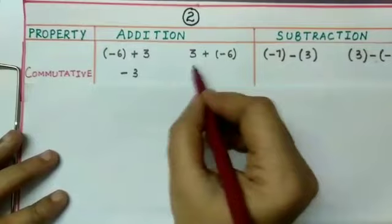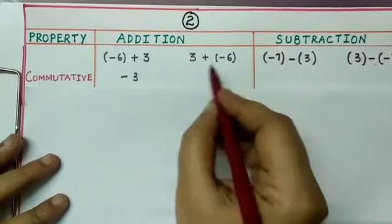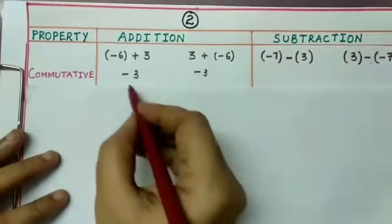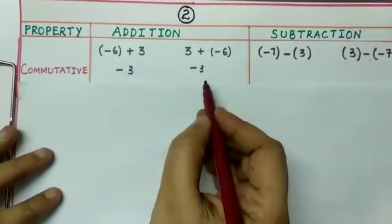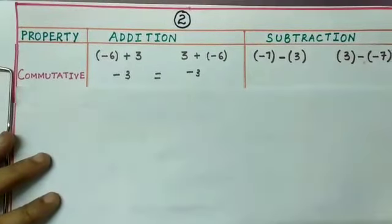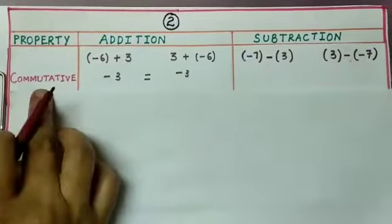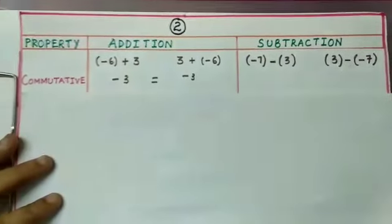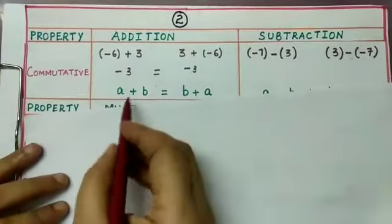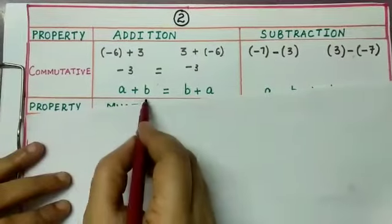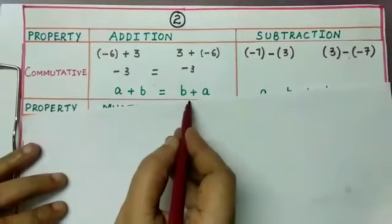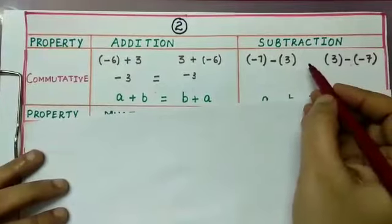Interchanging the numbers: 3 plus minus 6 also equals minus 3. Since minus 3 equals minus 3, integers follow commutative property under addition. Generally, for any two integers a and b, a plus b is equal to b plus a.